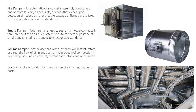Next is a smoke damper. This is a damper arranged to seal off airflow automatically through part of an air duct so as to restrict the passage of smoke, and is listed to the applicable recognized standards. Next we have volume damper. This is any device that, when installed, will restrict, retard, or direct the flow of air in any duct or the products of combustion in any heat-producing equipment's vent, connector, vent, or chimney. Essentially it's a way to physically choke down a duct — you can see a slat where you pull a lever up and down to restrict the amount of air going through.